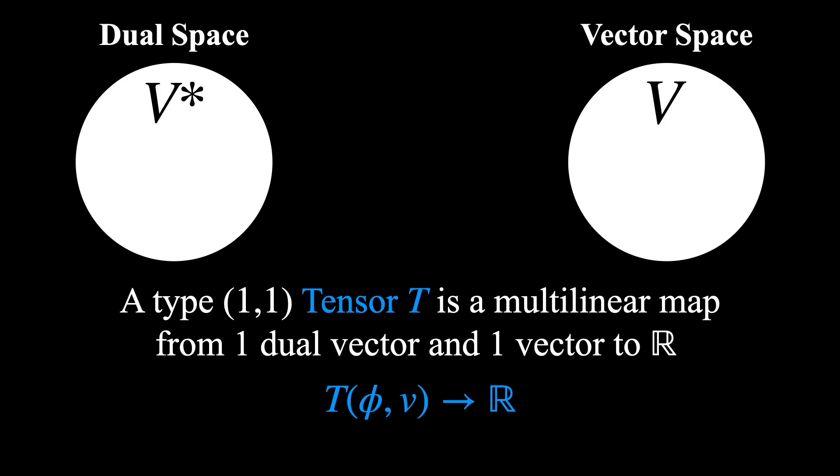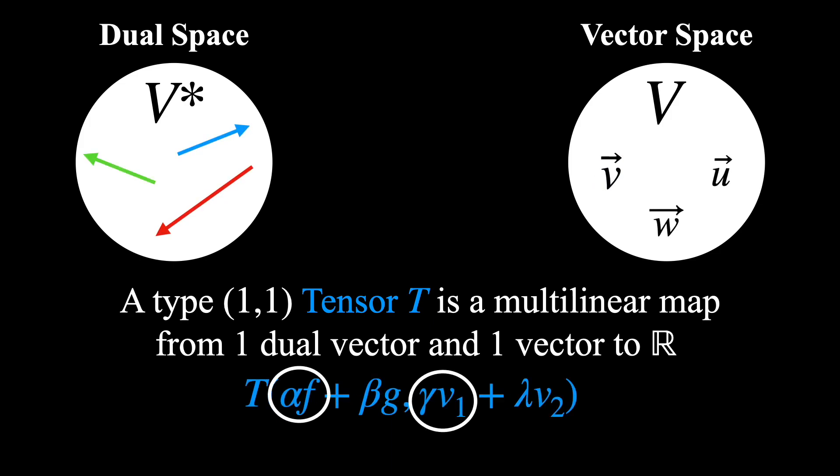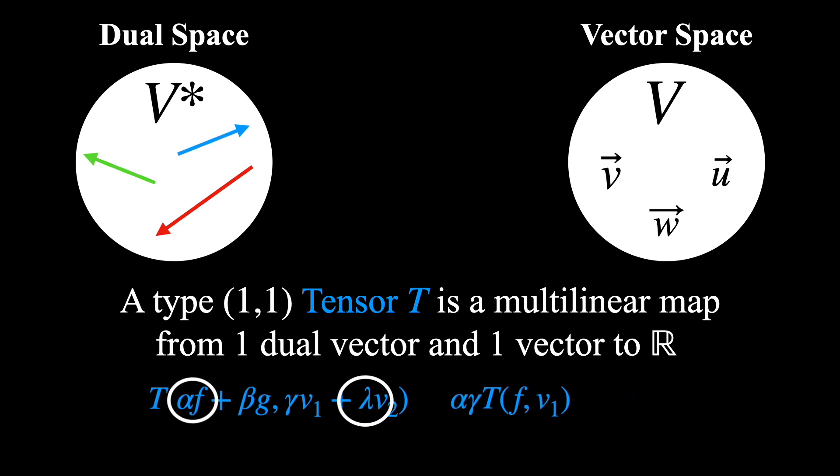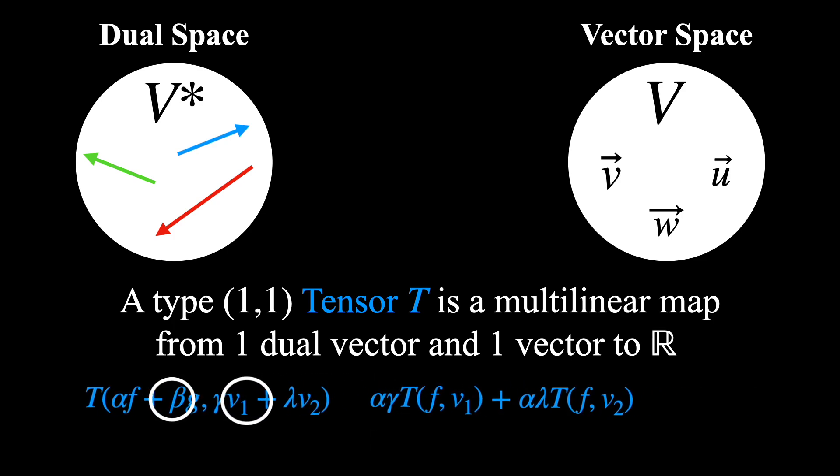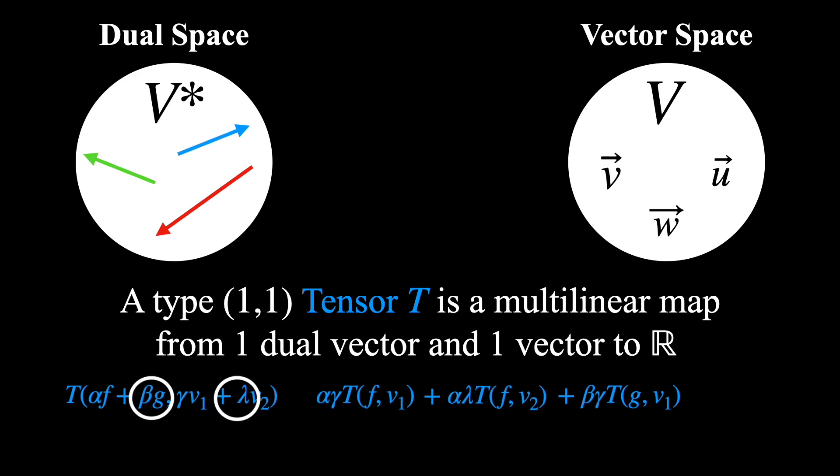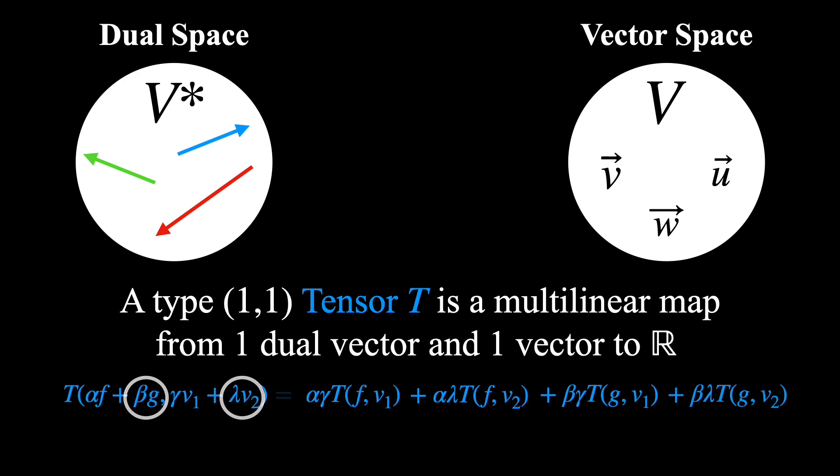let's suppose that φ can be written as a linear combination of two dual vectors f and g. And the vector v can be written as a linear combination of vectors v1 and v2, where all the scalars are coming from the real numbers. So this will turn the input into this expression. And then each argument will need to be linear. So if we go through them one by one, then we arrive at this equality.